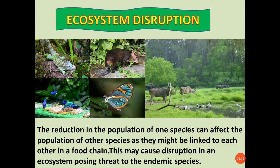Now you have understood, children, why endemic species are more important — because they generally have restricted distribution. Threats to endemics carry more risk of extinction compared to other species. The greater the isolated nature of the habitat, the more numerous the endemic species will be. That is why endemic species are a focus for the conservation of biodiversity. Thank you.